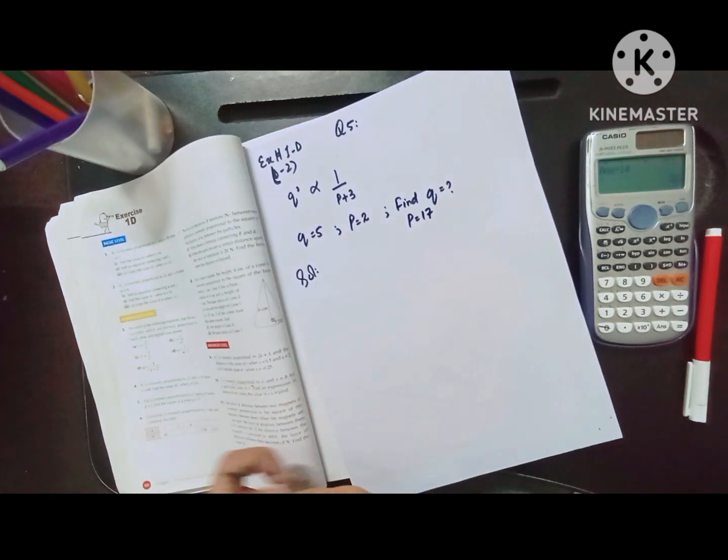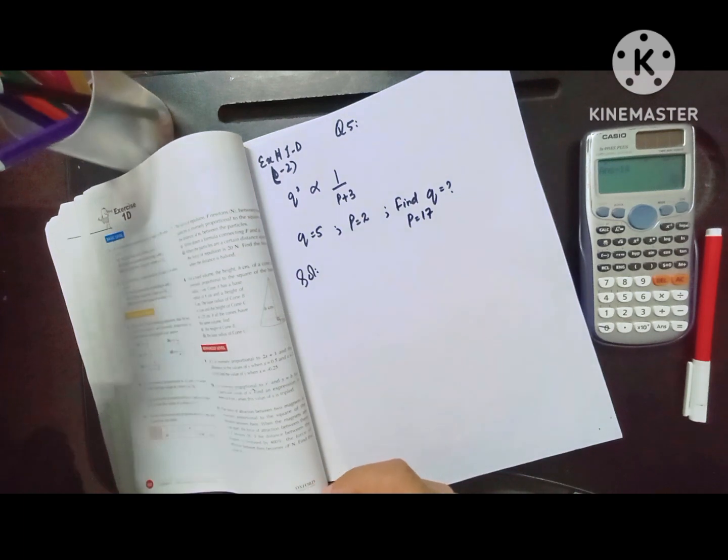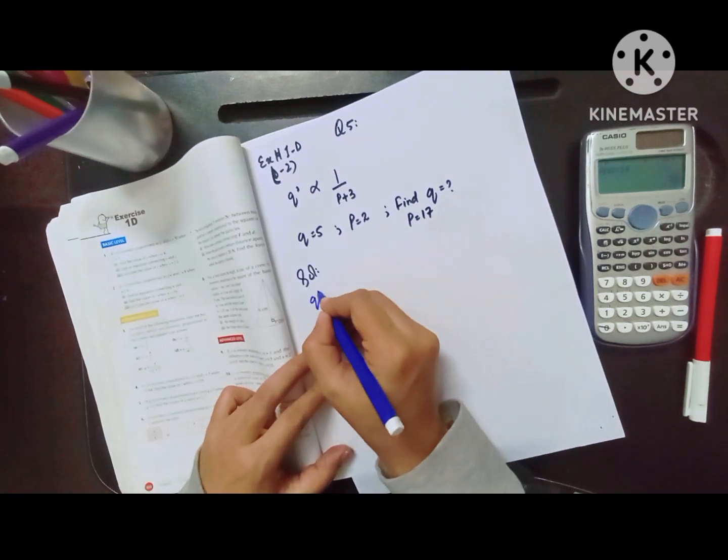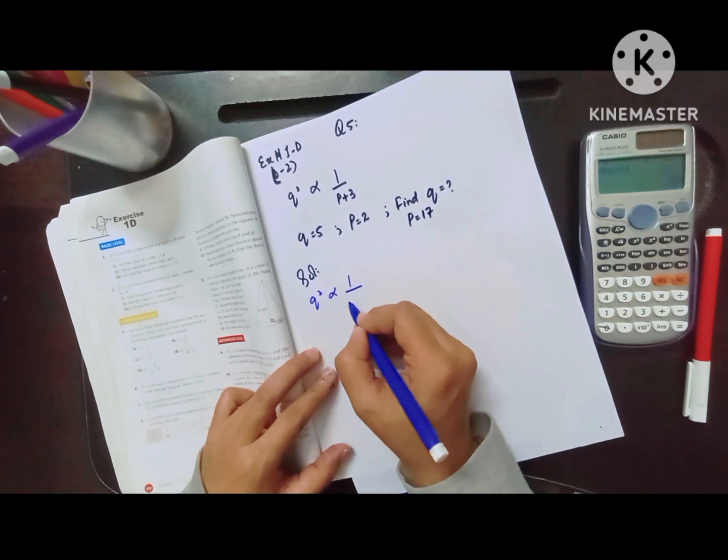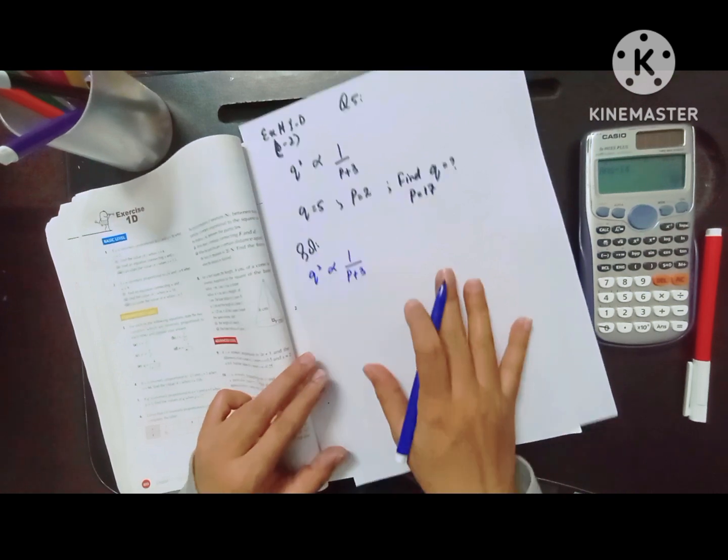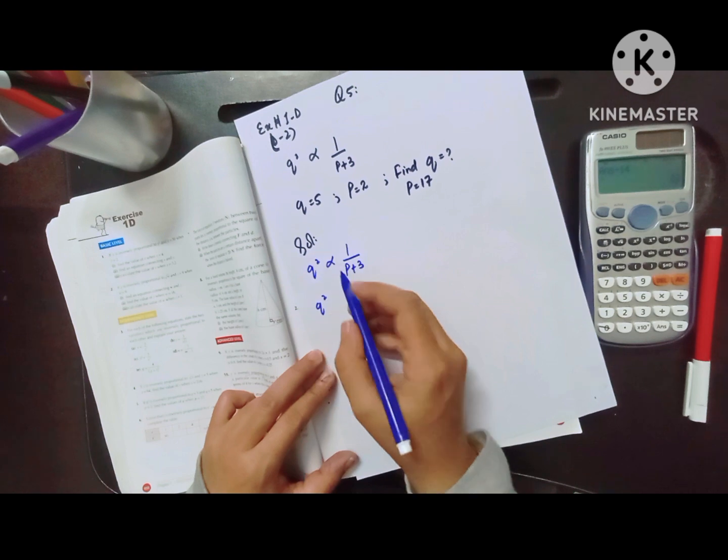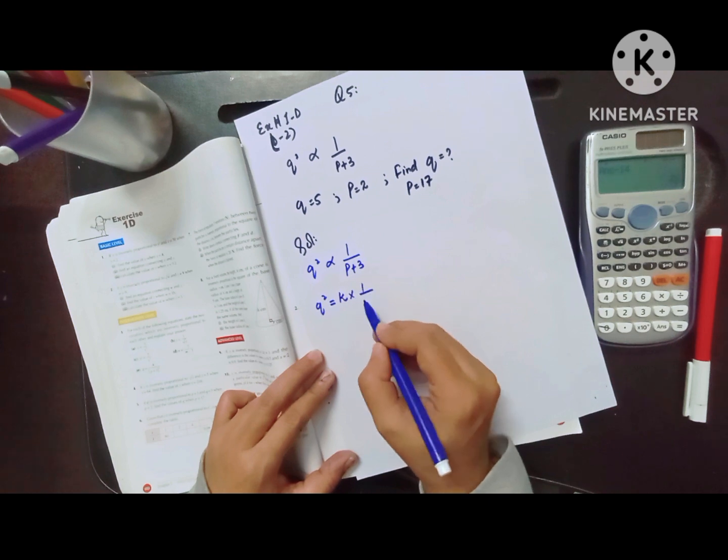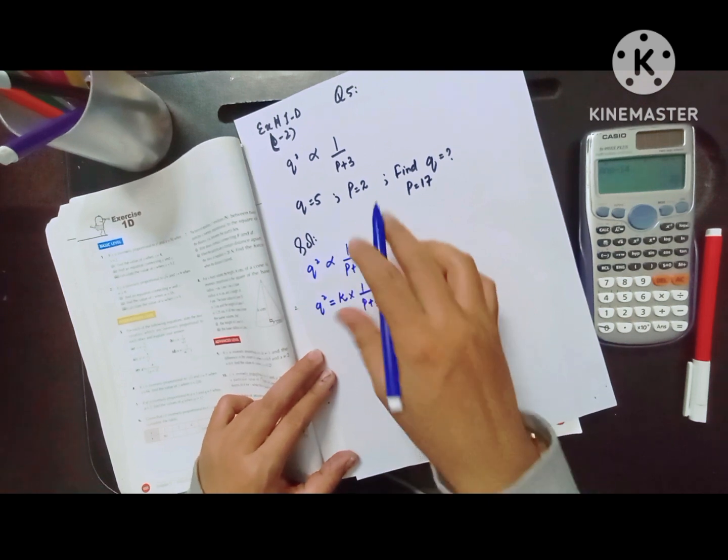Since q² is inversely proportional to p plus 3, we have to change the sign of proportionality to equality. Then we write q² equals k times 1 over p plus 3, according to the question.